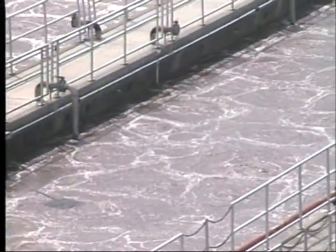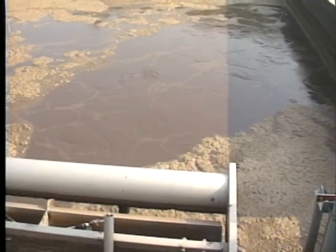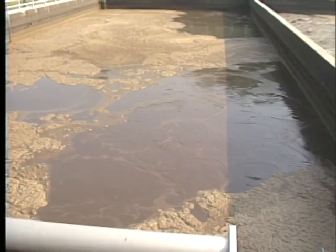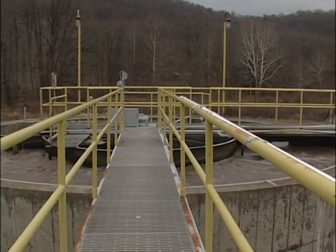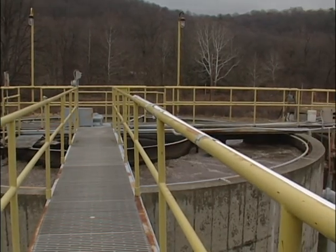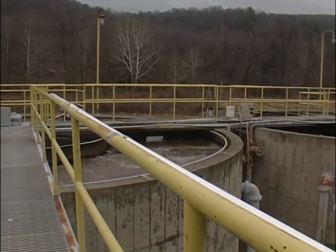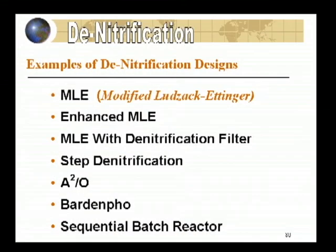In terms of activated sludge, extended aeration and sequential batch reactors can work well for achieving nitrification and denitrification when properly configured. As for the least capable activated sludge facility for denitrification, the contact stabilization process may be the most limited in this respect. There are a number of different designs to achieve denitrification, and a review by your facility engineer will be necessary before retrofitting any system.